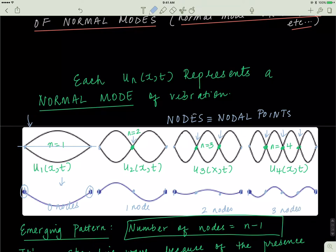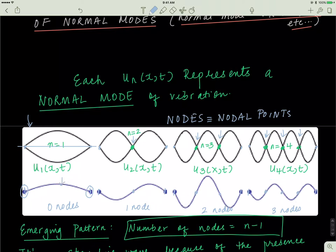So the point is that the number of nodes is simply n minus 1. And these are the waves that come out from the classical wave equation.